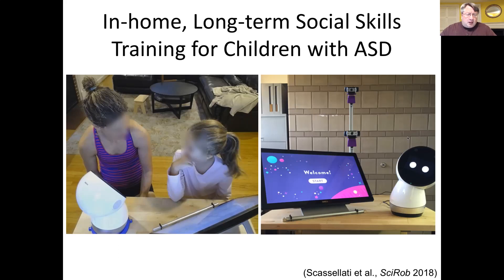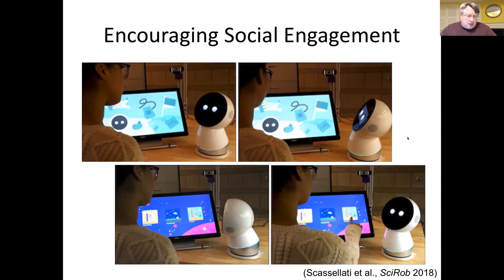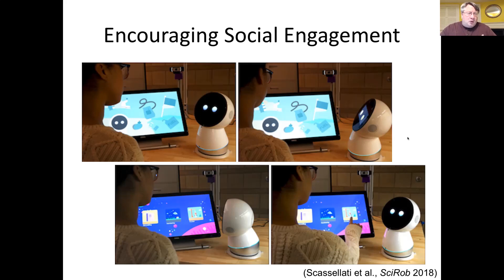We designed the system using a Jibo robot that we placed into 20 homes for kids with autism. With these systems, the robot played a role somewhere between a game master moderator and another player — doing many of the same things a therapist would do sitting in the home with the family. Sometimes it would engage in the game itself, sometimes it would moderate the game and engage the child and one of the adult caregivers.